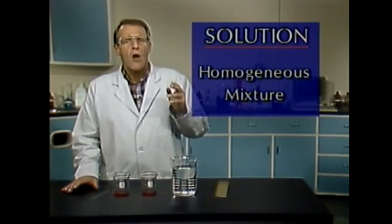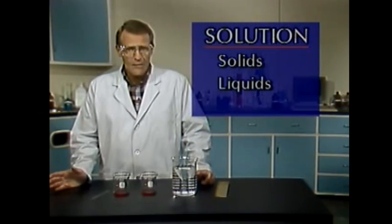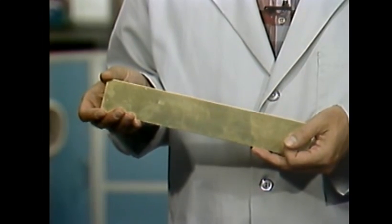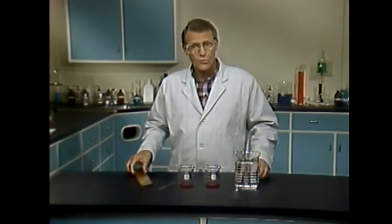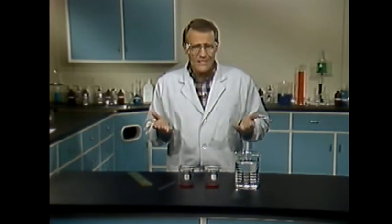A solution is a special type of mixture called a homogeneous mixture. The term homogeneous refers to the fact that the materials in a solution are evenly mixed. A solution can be a mixture of solids, liquids, or gases, or a combination of any of these, as long as the materials involved are evenly mixed. One example of a solid solution is an alloy, which is basically a solution of metals. This piece of yellow brass, for instance, is a solution of 67% copper and 33% zinc. Air is another example of a solution — it's approximately 78% nitrogen and 21% oxygen. The other 1% consists of carbon dioxide and elements such as helium and neon. What makes air or any other mixture a solution is that whatever is in it is evenly dispersed throughout.